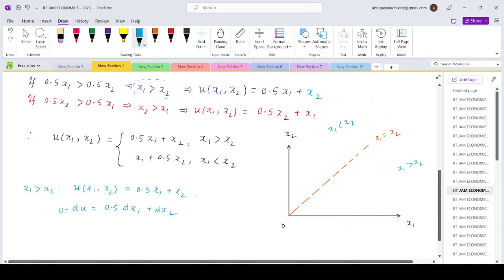So du would be 0 for a particular indifference curve. So 0 equals 0.5 dx₁ plus dx₂.